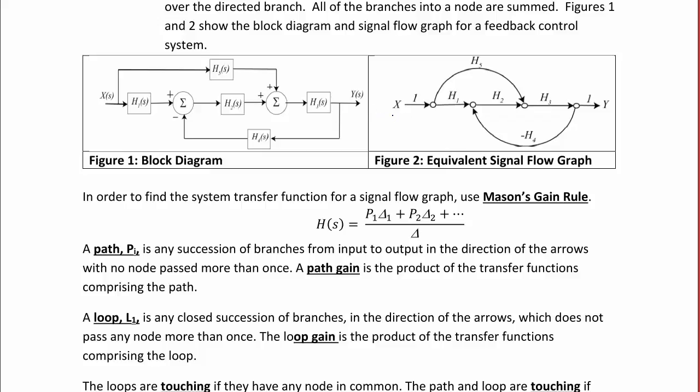So over here, we still have the input x and the output y, but now we have transmittance along these arrows. So here, for example, where we had H5, we put H5, and where we had H1, we put H1.